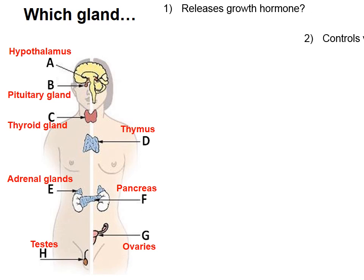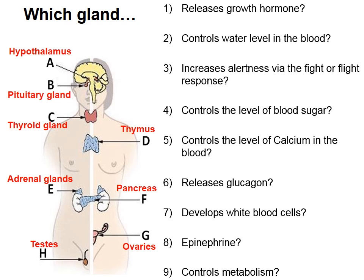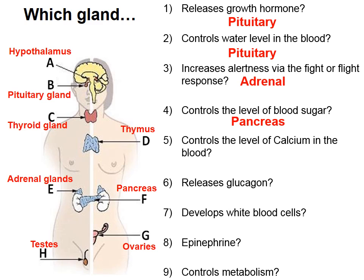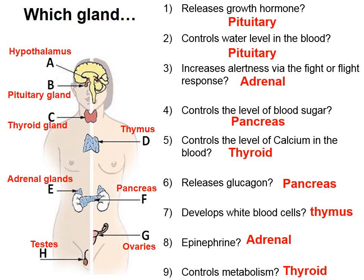Now try to answer these nine review questions. Which gland releases growth hormone? The pituitary gland. Which controls water level in the blood? The pituitary gland. Which increases alertness via fight or flight? The adrenal glands. Which controls blood sugar? The pancreas. Which controls calcium in the blood? The thyroid. Which releases glucagon? The pancreas. Which helps develop white blood cells? The thymus. Which releases epinephrine? The adrenal glands — epinephrine is also called adrenaline. Which controls metabolism? The thyroid gland.